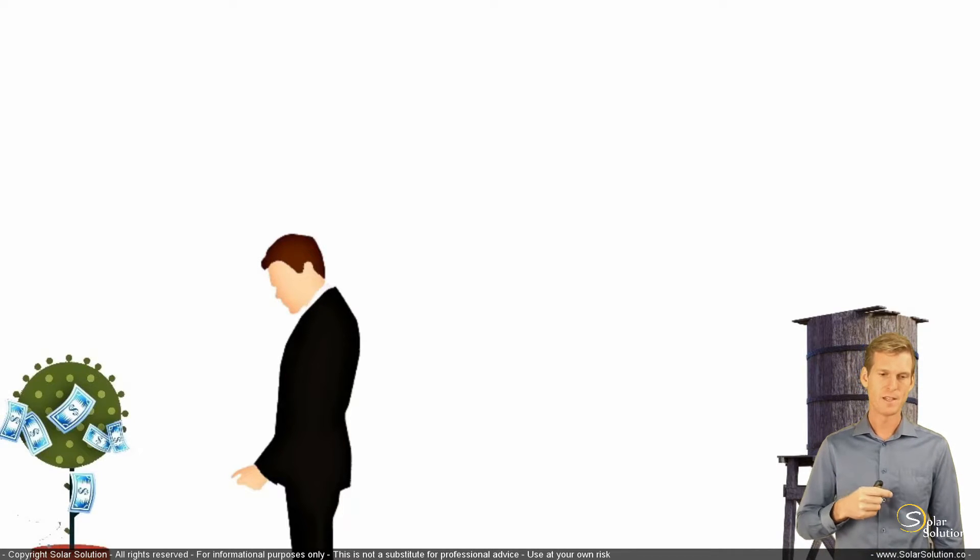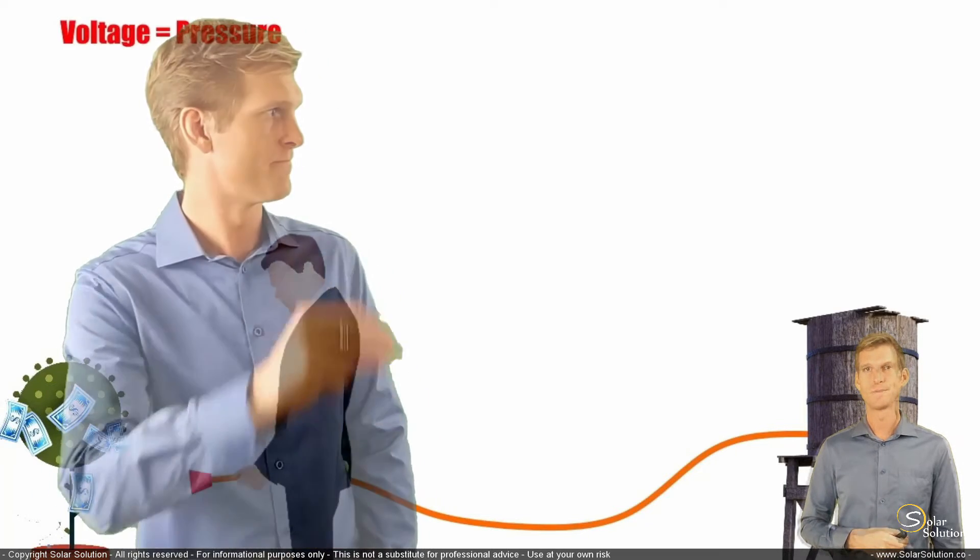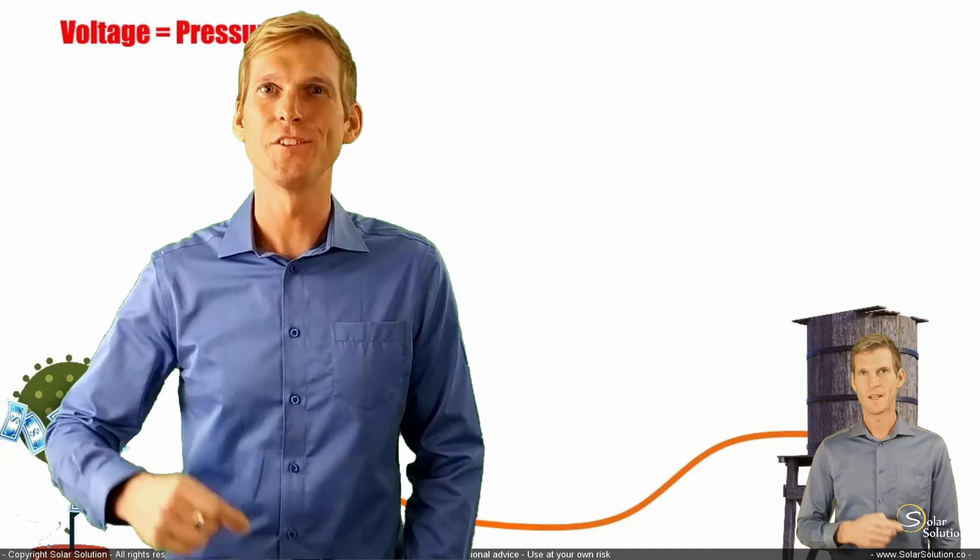So what he does is he connects a water hose to his water tank, and before he starts to water the money tree, he already has a certain pressure in the hose. Before he opens the hose, there is a pressure in the hose as a result of the elevation of the water tower. So now you can compare the pressure in the water hose with electrical pressure, with voltage.